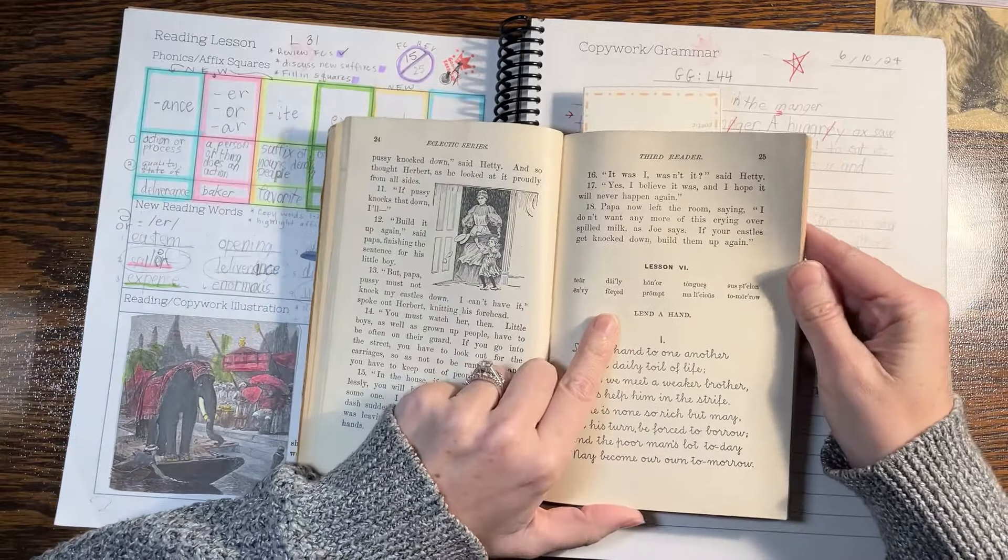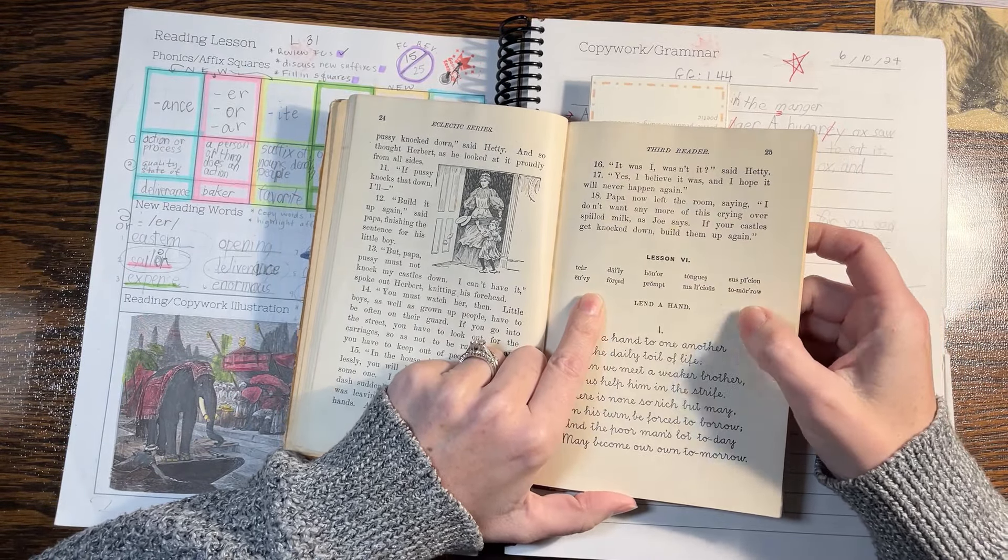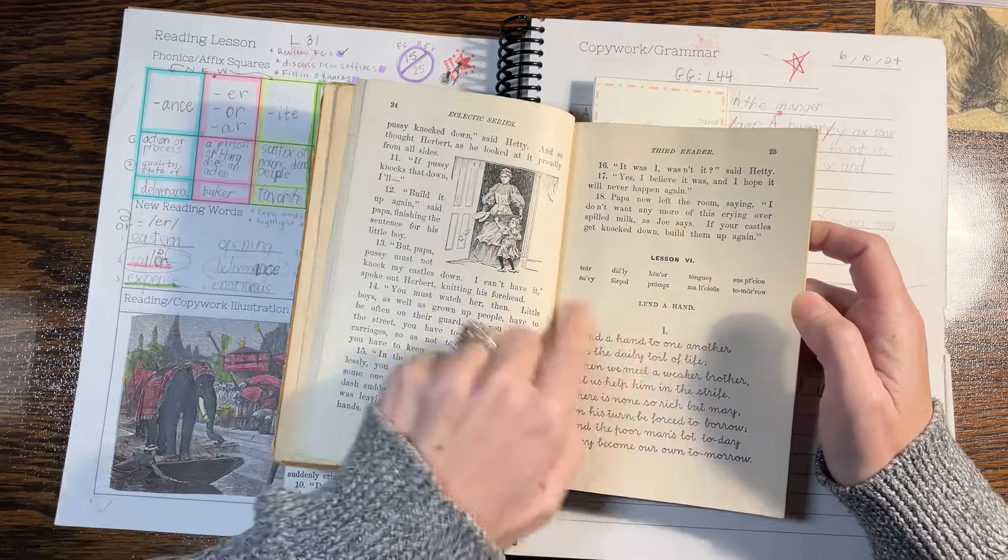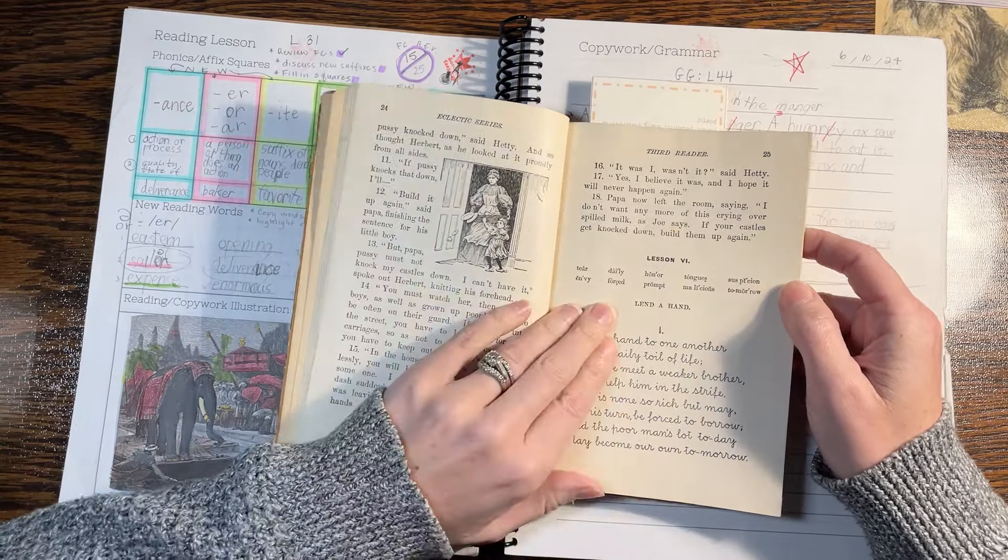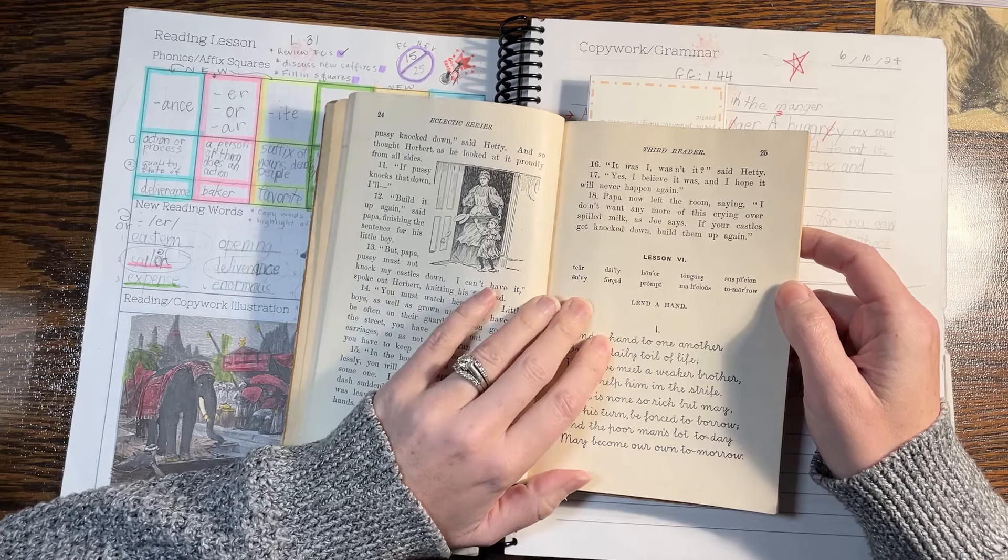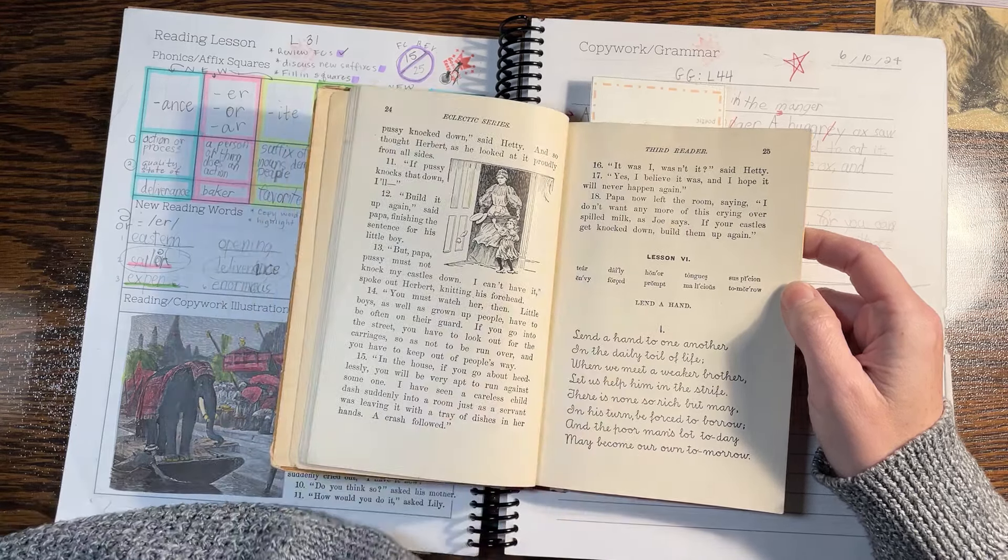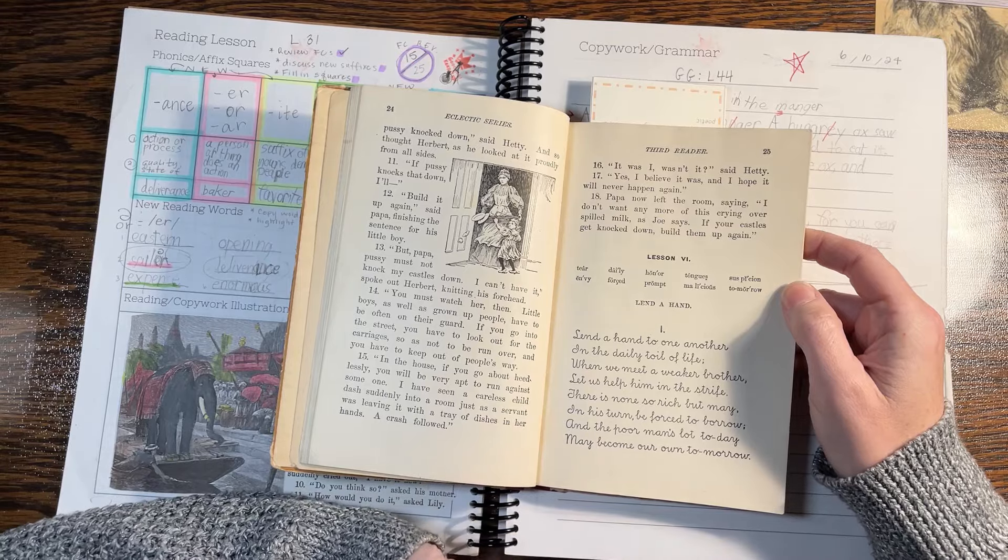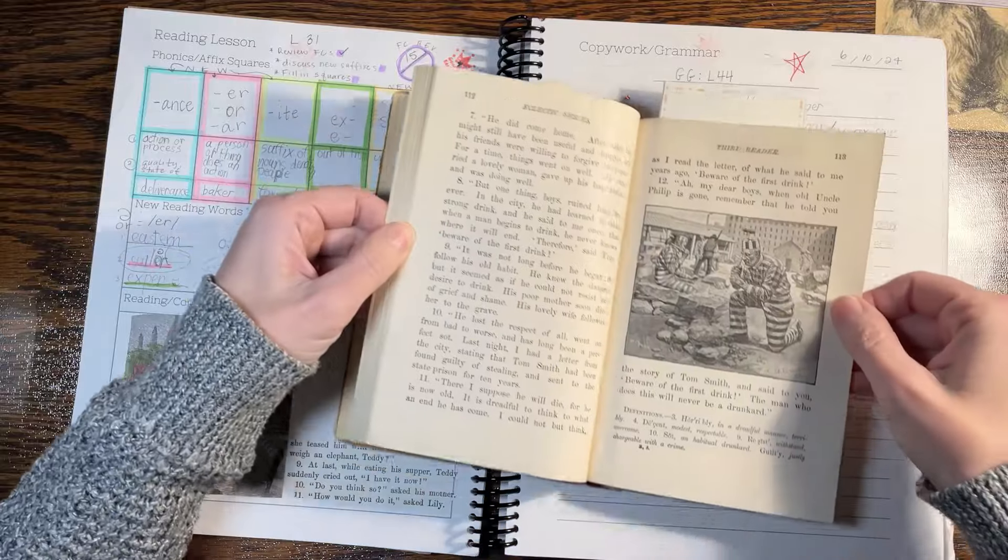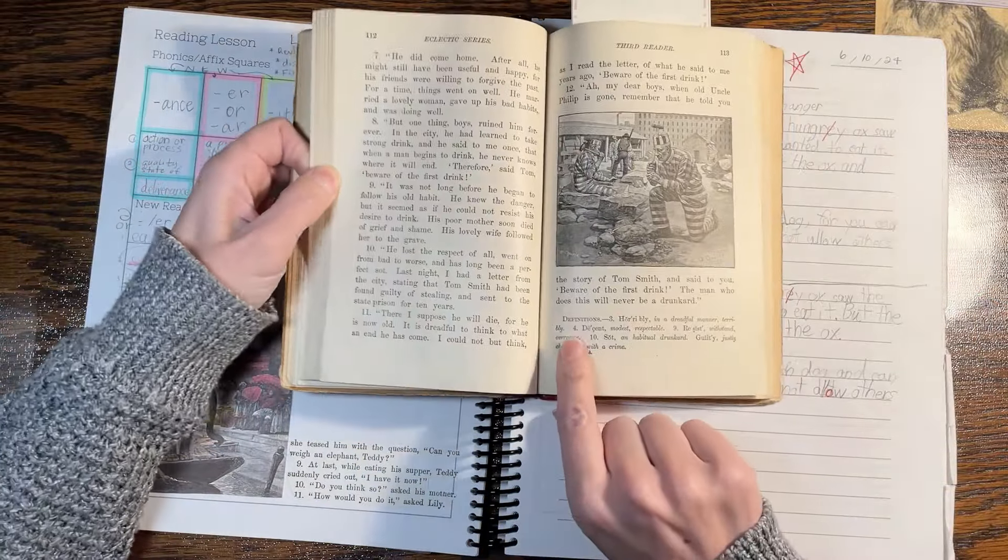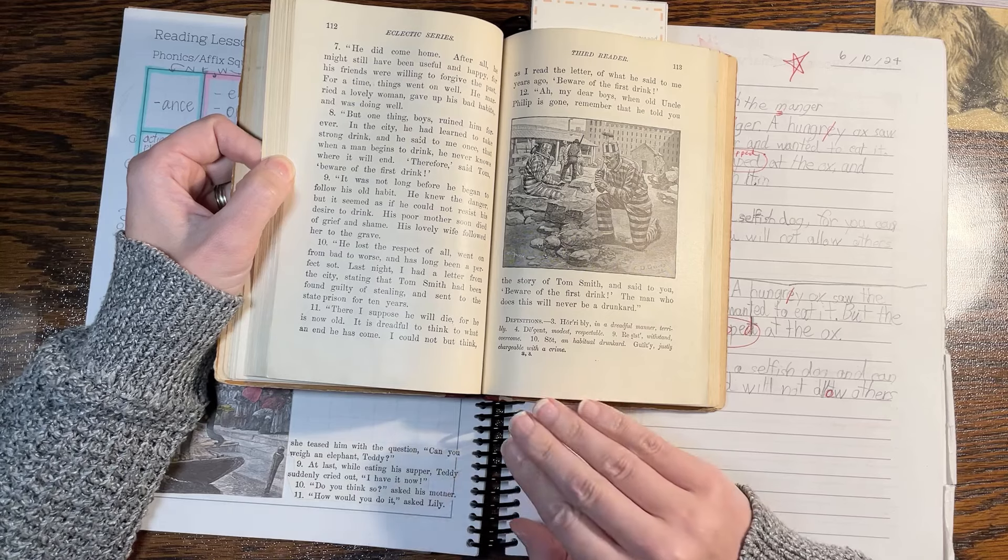Once we get to the third reader, I kind of go to a one lesson a week flow. I really like just for fluency reasons to just read those passages over and over until they're just really reading them with expression, proper pauses and inflection. They really understand them. Their comprehension has really been brought up since the first day.